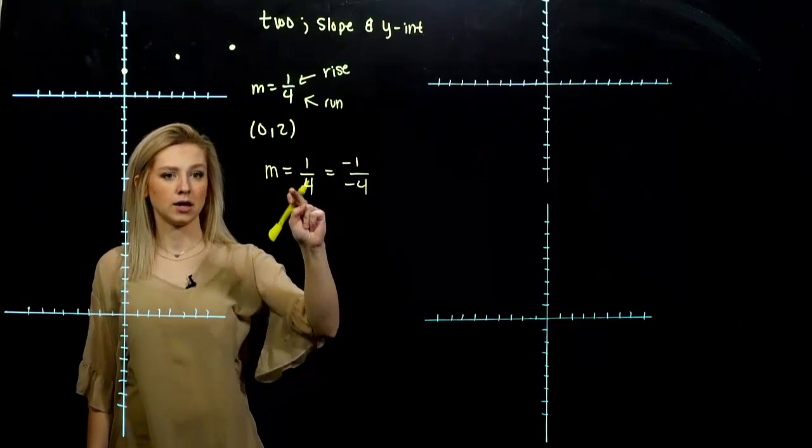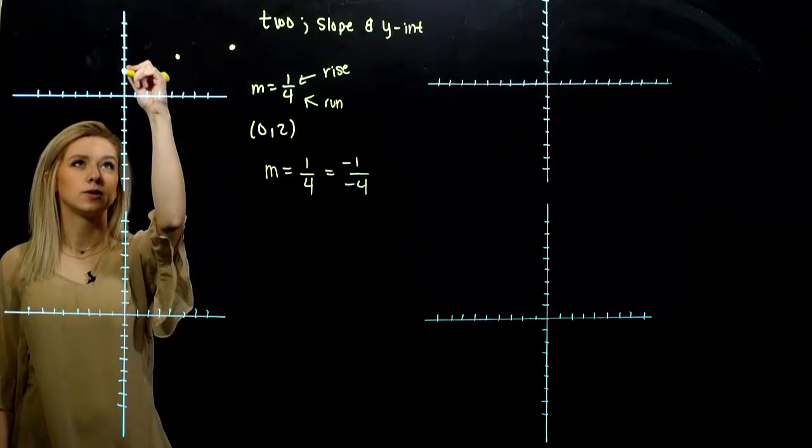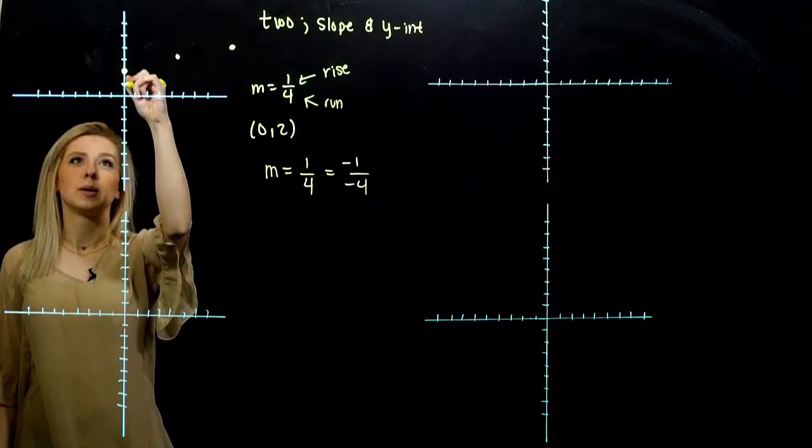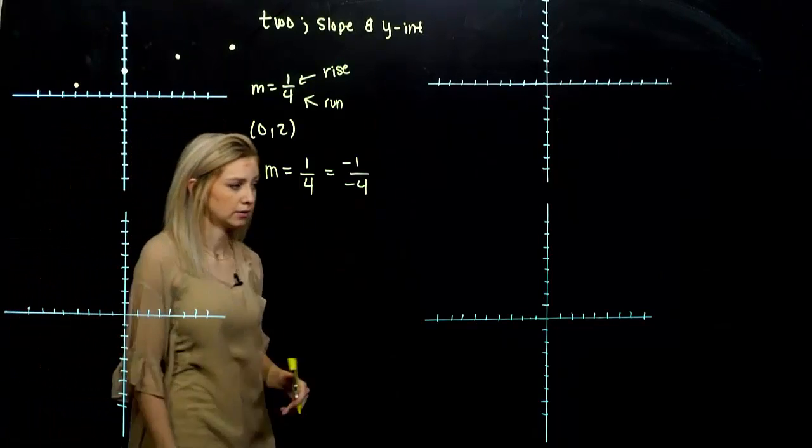Since a negative divided by a negative gives us positive from the y-intercept or from any point really on the line, we could fall one and run back one, two, three, four. That's also going to fall on the line. And we can see that it does.